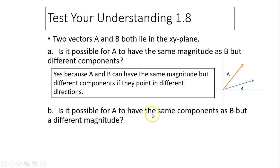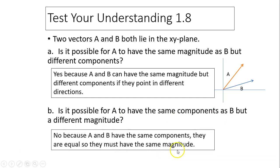Question B: Is it possible for A to have the same components as B but a different magnitude? Well, if A has the same components as B, that means A and B are the same. No, because if A and B have the same components, they are the same, so they have the same magnitude.